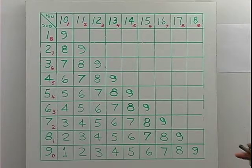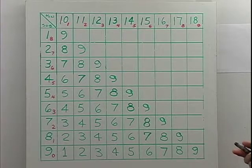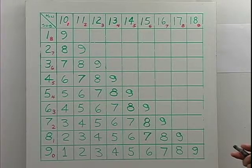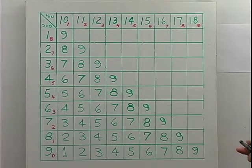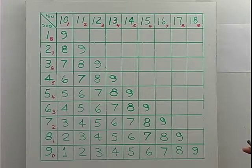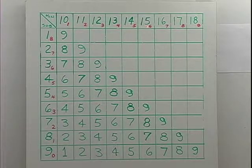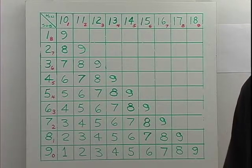What I wrote in red is the sum of the numbers in the minuend. 1 and 0 is 1, 1 and 1 is 2, 1 and 2 is 3, 1 and 3 is 4, then 5, 6, 7, 8, 9. That's the sum of the digits and I wrote it as a subscript in red.